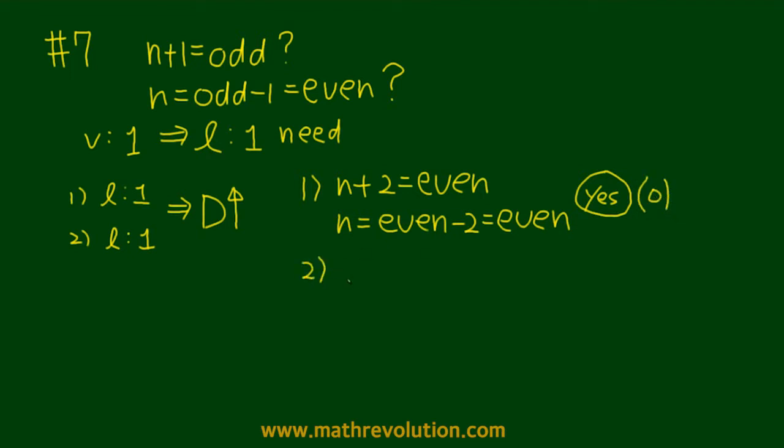What about condition 2? It says that n minus 1 is equal to an odd number. So n is equal to some odd number plus 1, and that's an even number. So again, condition 2 is sufficient, and we can answer the question with that too.